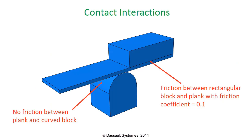We will have contact in two regions. The first is between the plank and the curved block — we will make this interaction frictionless. The second is between the rectangular block and the plank, where we will specify a friction coefficient of 0.1 and tell Abaqus it is isotropic, meaning the friction coefficient is the same in all directions. This means we will first create two interaction properties: frictional and frictionless, just like we did in the contact pairs tutorial. However, we will apply them a little differently.